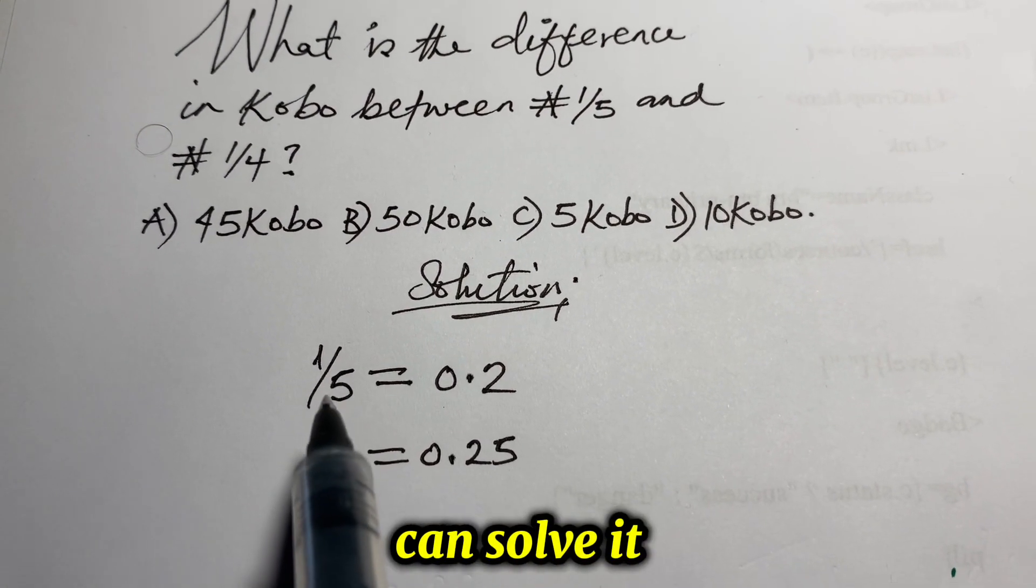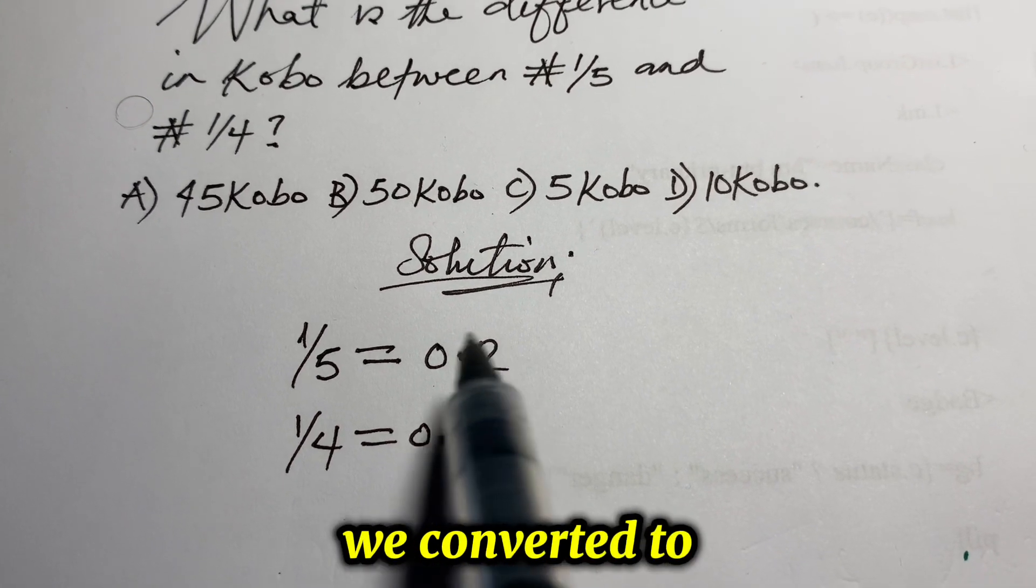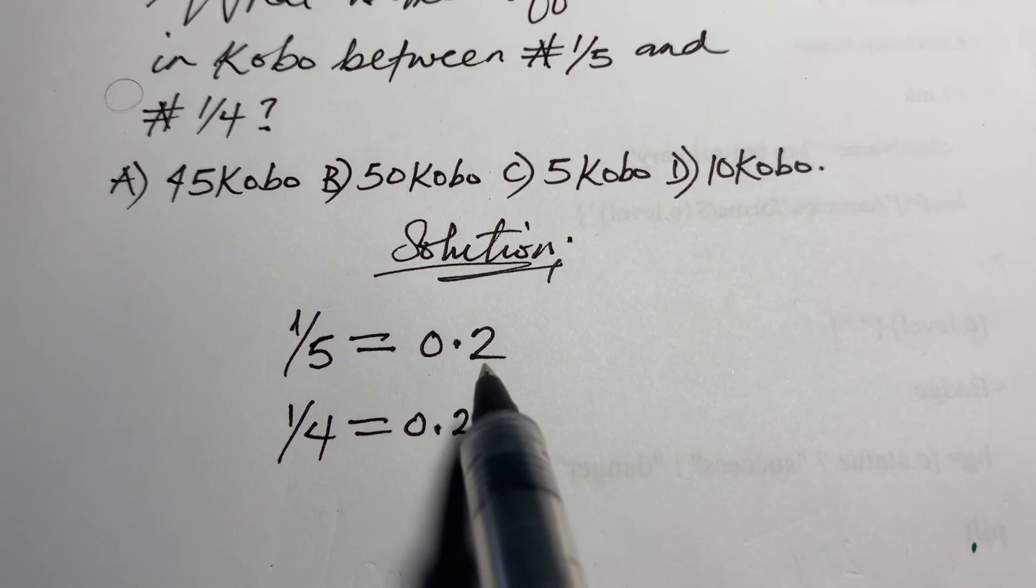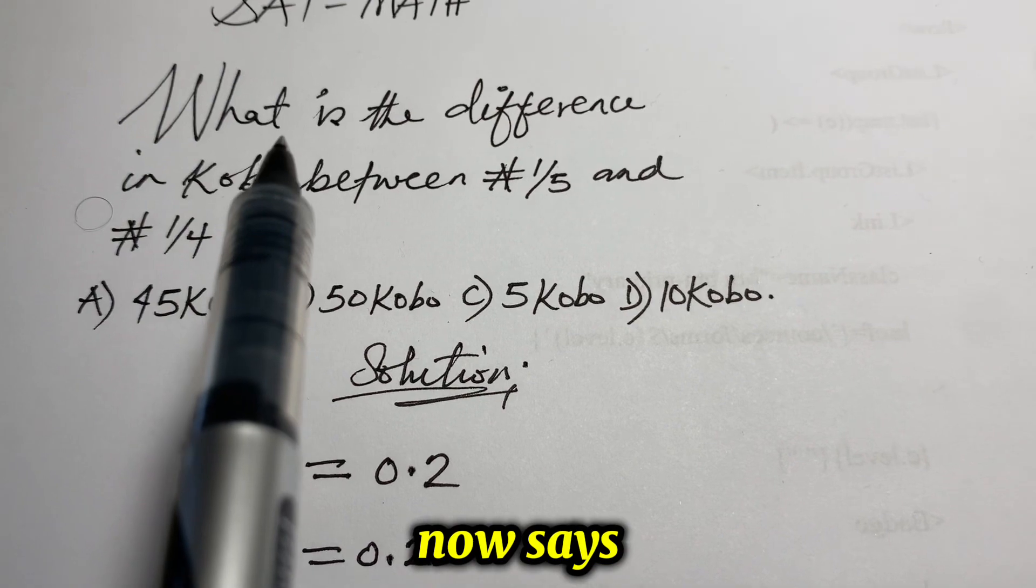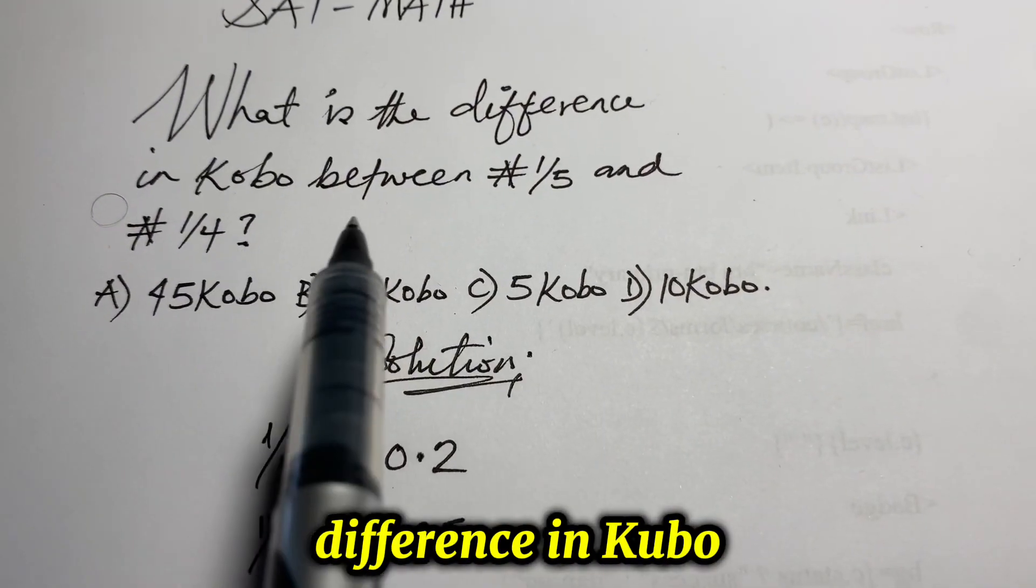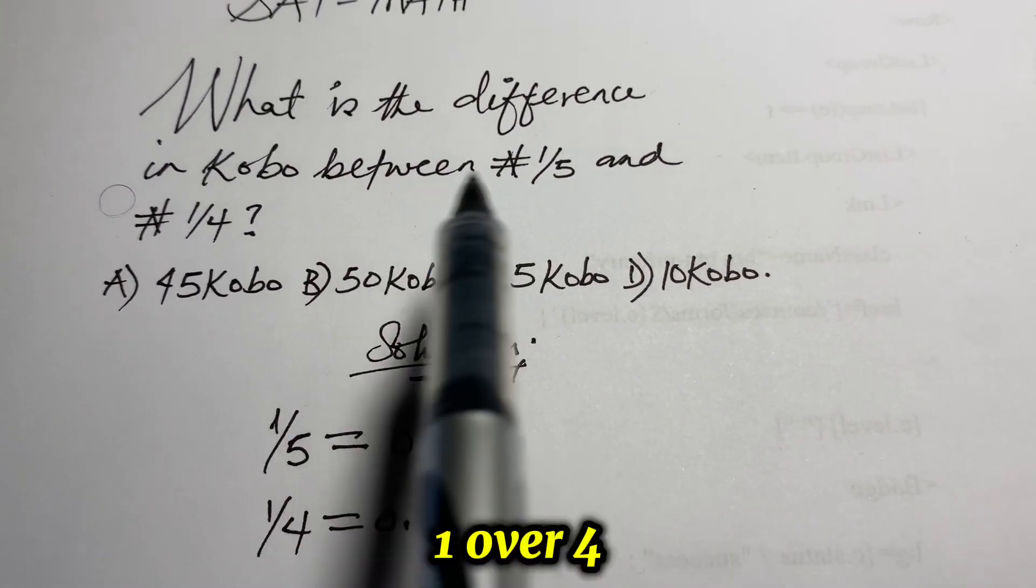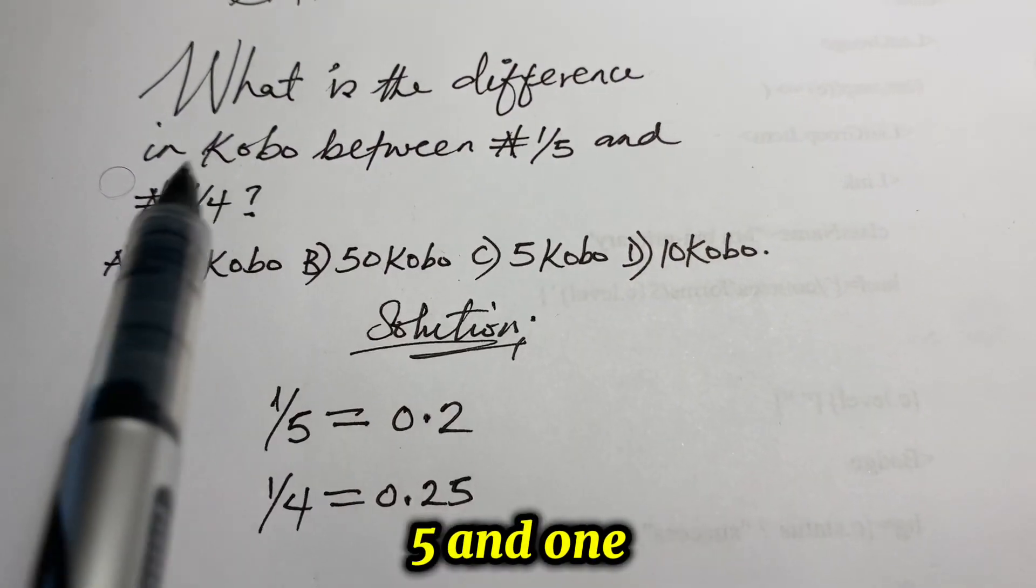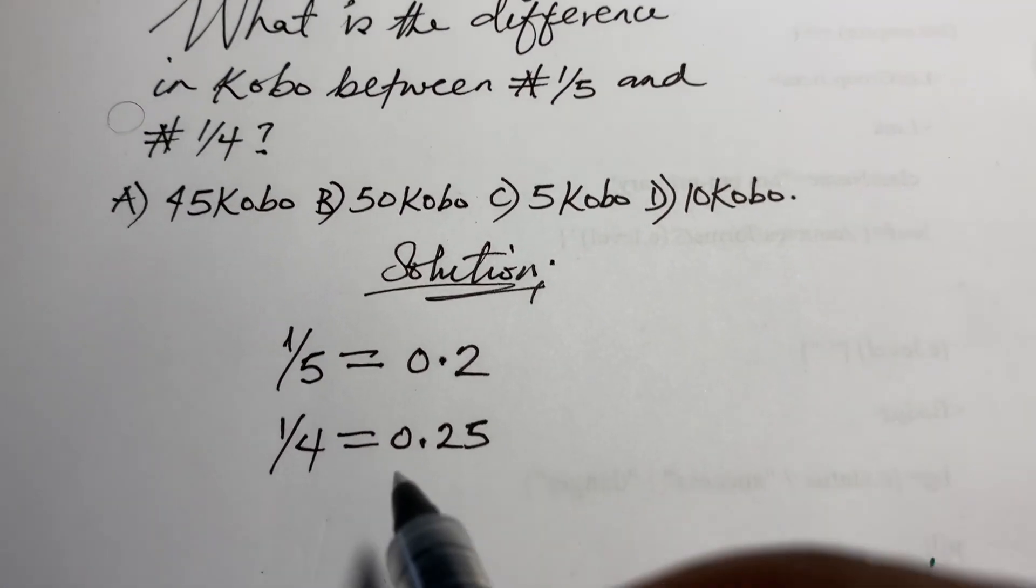Of course, you can solve it with this, but I just want to keep things simple, which is why we convert it to decimal fraction. So, the question now says, what is the difference in kobo between this and this? 1 over 4 and 1 over 5. 1 over 5 and 1 over 4, rather.